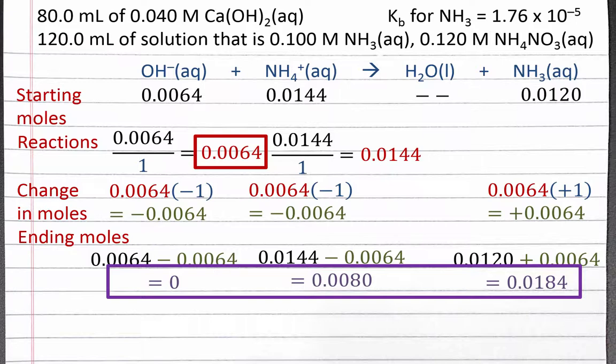Although it didn't happen in this problem, if ammonium had been the limiting reagent, then we would have had hydroxide — a strong base — and ammonia — a weak base — left over in solution with no ammonium. This would have destroyed our buffer solution, so to calculate the pH we would have just used the hydroxide ion concentration, since hydroxide is the strong base and ammonia is the weak base. This is also what happens with a strong base–weak acid titration when far enough beyond the equivalence point.